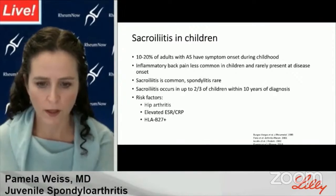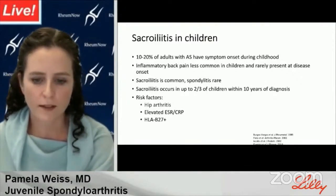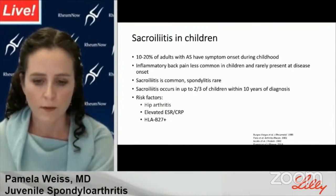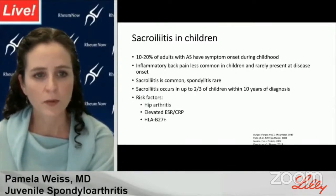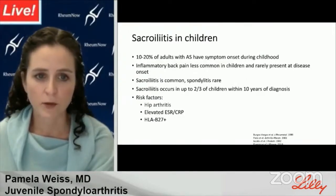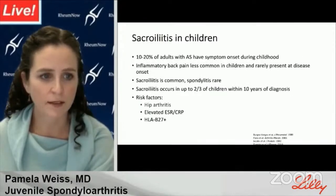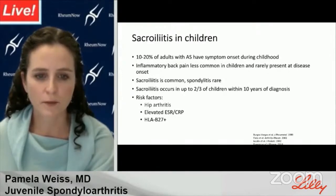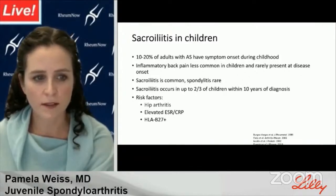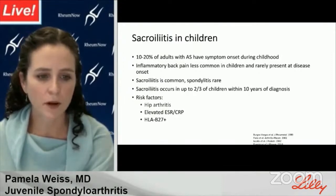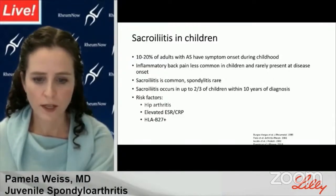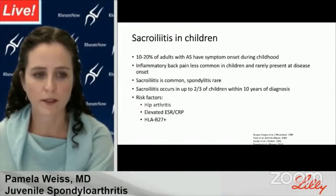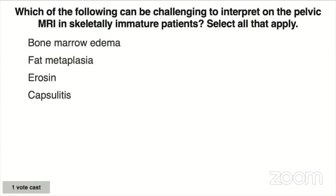Moving on to our second focus area — axial disease — a manifestation well-known to you but with a pediatric twist. Ten to 20 percent of adults with ankylosing spondylitis have symptom onset during childhood. Inflammatory back pain is less common in children and rarely present at disease onset. Sacroiliitis is common; spondylitis is rare. Sacroiliitis occurs in up to two-thirds of children within 10 years of diagnosis, and risk factors in the juvenile population include hip arthritis, elevated inflammatory markers, and HLA-B27.